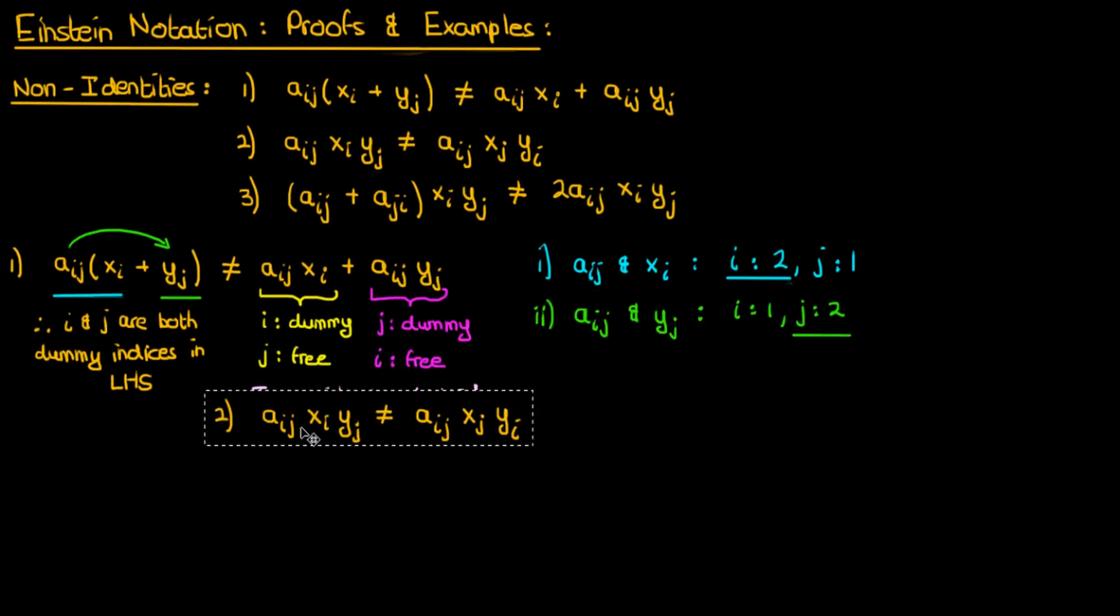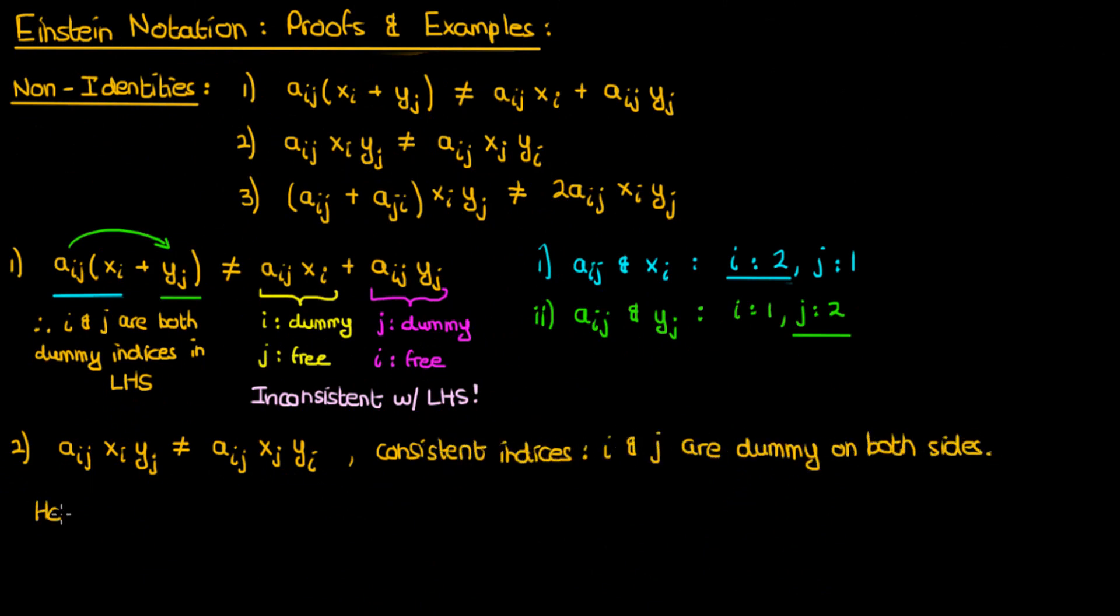What about the second non-identity? Why is this true? Well, if you look at the indices, then both i and j are dummy indices on both sides of the equation, so that's not a problem. However, if you look at some scenarios like, for instance, when you want to determine the coefficient of x1 times y2, then on the left-hand side that coefficient will just be a12. However, on the right-hand side, because the indices are switched,